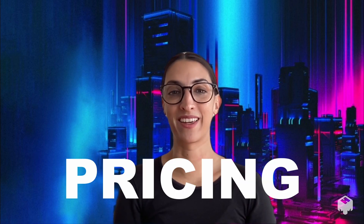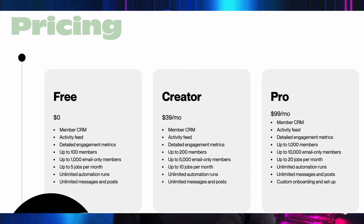Burp offers three different pricing tiers. They have a free version, which is pretty comprehensive to be honest. The main differences between the tiers are around the number of members you can have in the community, as well as the number of what they call "jobs" per month, which are the different types of tasks you would set up. The great news is you still have detailed engagement metrics even in the free version, and you get unlimited automation runs and unlimited messages and posts.